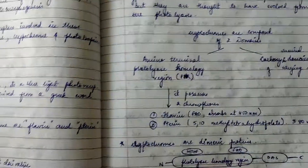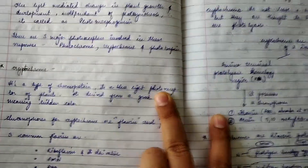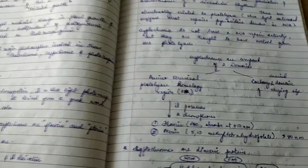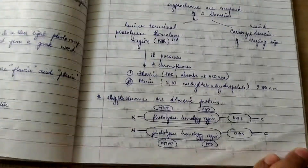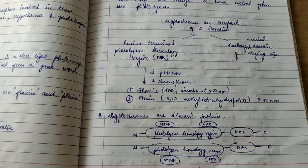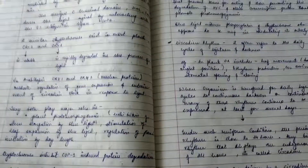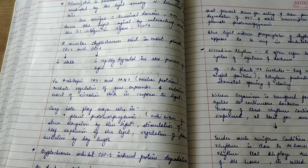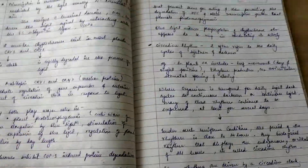So these are the basic things you need to remember about photomorphogenesis and cryptochrome. In the next video, I will be posting about phytochromes and phototropins in detail with their structure. Important points include: pterin and flavin proteins and their arrangement, functions of the N-terminal and C-terminal domains, the three common flavins, circadian rhythm, cry1 and cry2 functions, and how cryptochromes inhibit COP1-induced protein degradation.